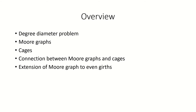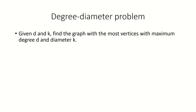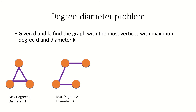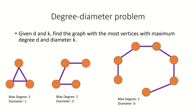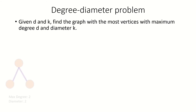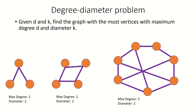Let's talk about the degree-diameter problem. The problem is to find the graph with the most vertices, with a maximum degree d and diameter k. Intuitively, if you create increasingly large graphs while not allowing their maximum degree to increase, you will eventually get a really sparse graph with a high diameter and vertices far away from each other. Similarly, if you create increasingly large graphs while not allowing their diameter to increase, you will eventually have to raise the maximum degree. So the degree-diameter problem asks: if we restrict the maximum degree to be at most d and restrict the diameter to be k, just how big can we make our graph?